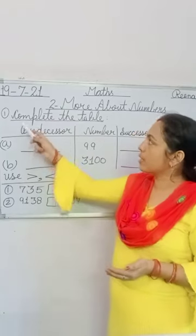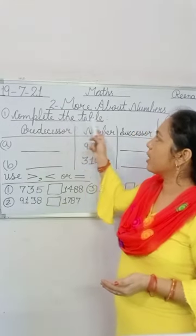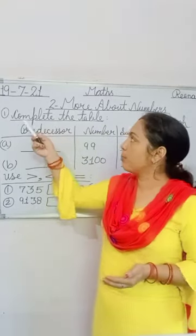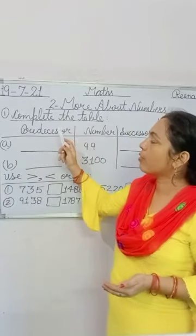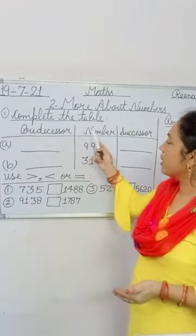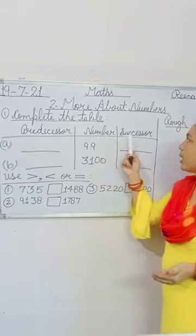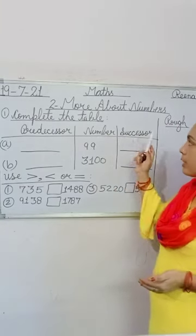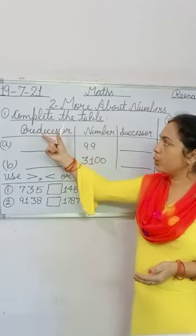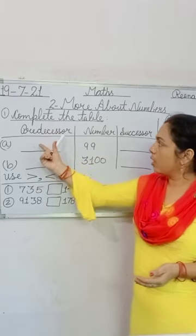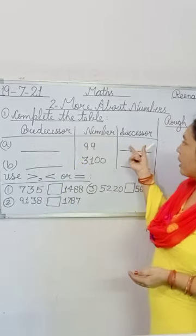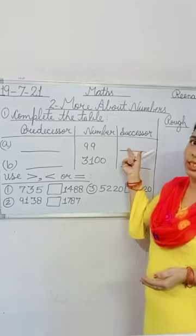Your topic is 'Complete the Table.' That means your first question is complete the table. In your table you have been given: predecessor, number, and successor. You write the predecessor number here and the successor number here.